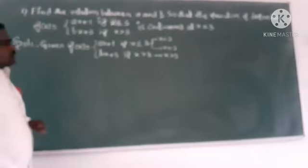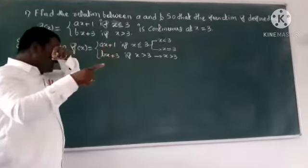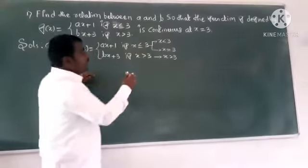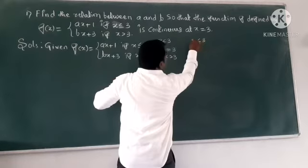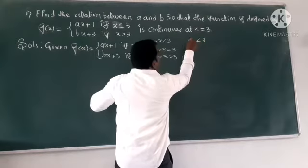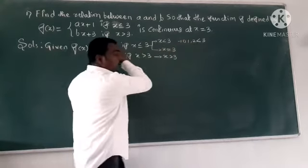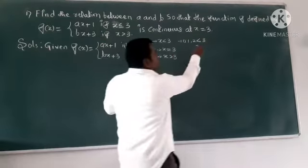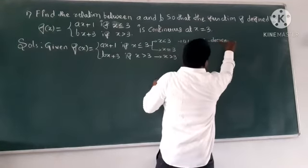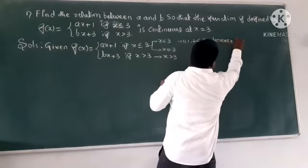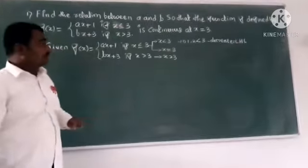Looking at the signum function: when x equals 3, the value is big compared to others. On the left-hand side, the values decrease — going to zero, then minus one — so the left-hand limit applies.